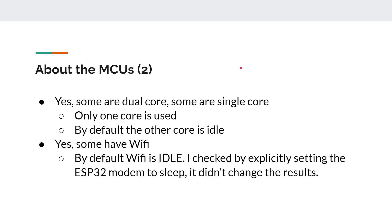A couple of things to mention about these microcontroller boards: some are dual core and some are single core, which applies to boards from both ARM and Espressif. The ESP32 is a dual core setup, whereas the S2 and the C3 are single core. From all the testing I've done, by default the other core appears idle and doesn't really affect performance or power consumption. Also, some of them have Wi-Fi. By default, the Wi-Fi is idle — it's not connected to any network or scanning. I've checked whether you need to explicitly put the modem to sleep. On the ESP32 boards there is a command to put the modem to sleep, which I did, and it didn't change the results.